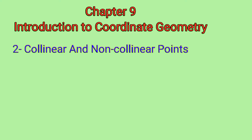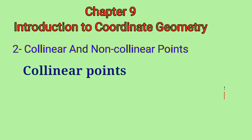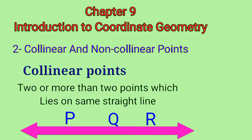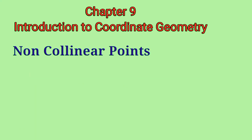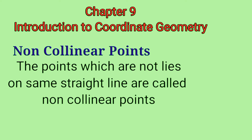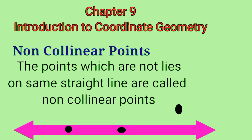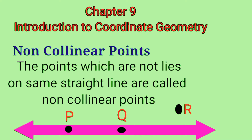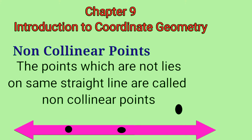The next definition is collinear and non-collinear points. Collinear points: two or more points which lie on the same straight line are called collinear points. Non-collinear points: points which do not lie on the same straight line are called non-collinear points. Here we can see points P and Q on one line, but point R is not on that same line — so P and Q are collinear points, but R is a non-collinear point. P, Q, and R together are non-collinear points.